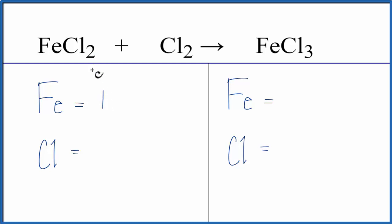We have one iron atom, two Cls, plus we have the two Cls here, so we need to add those, so we have a total of four chlorine atoms. On this side of the equation, we have one iron and three chlorine atoms.